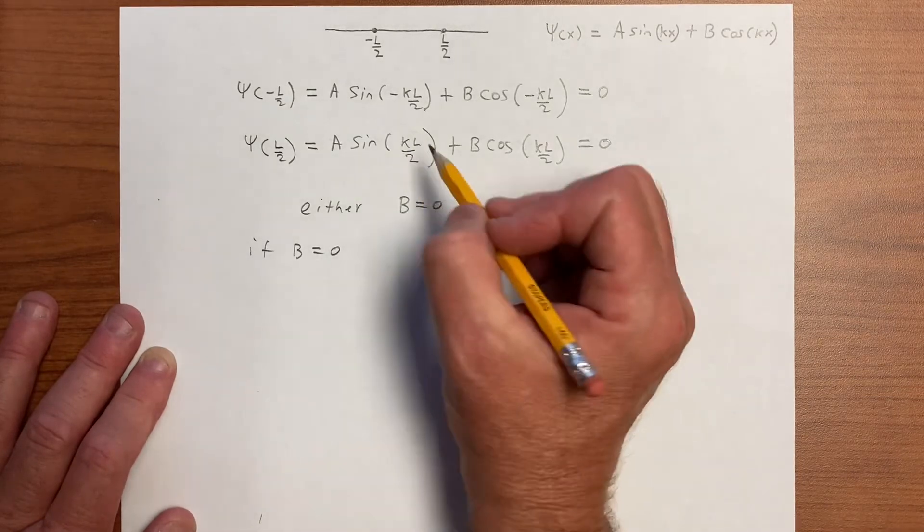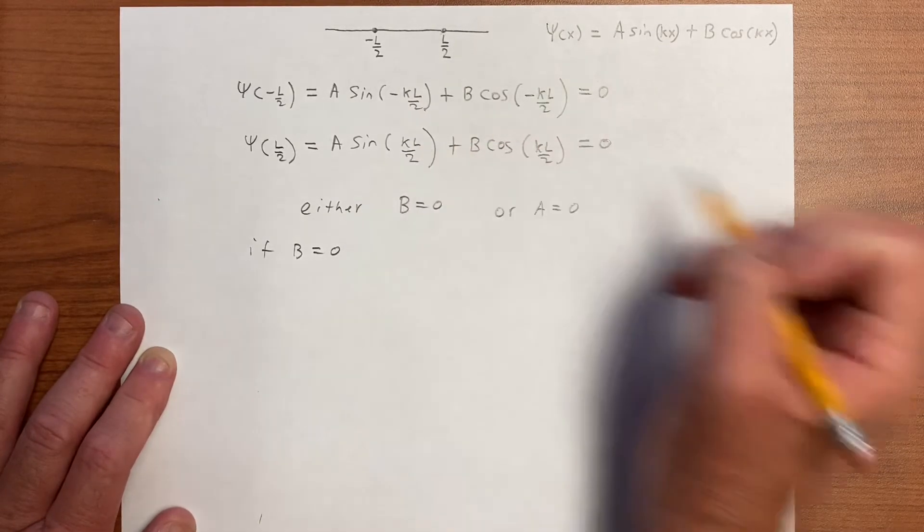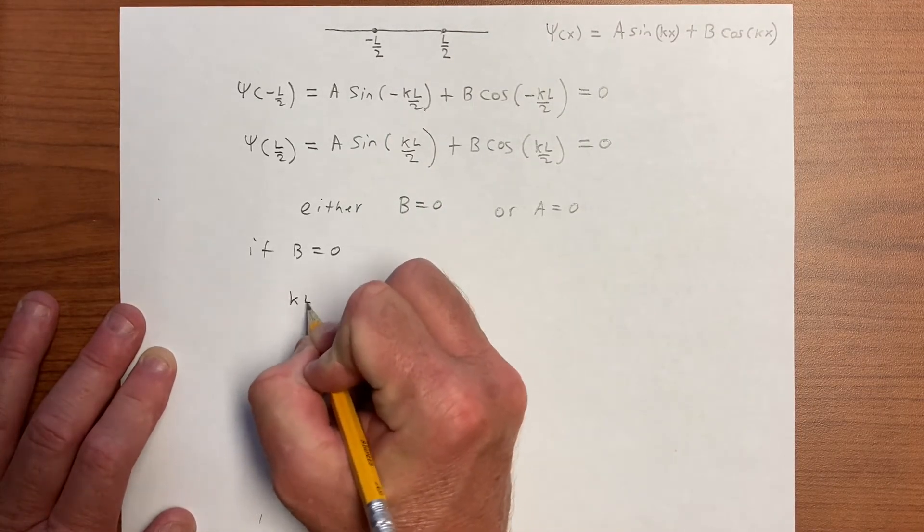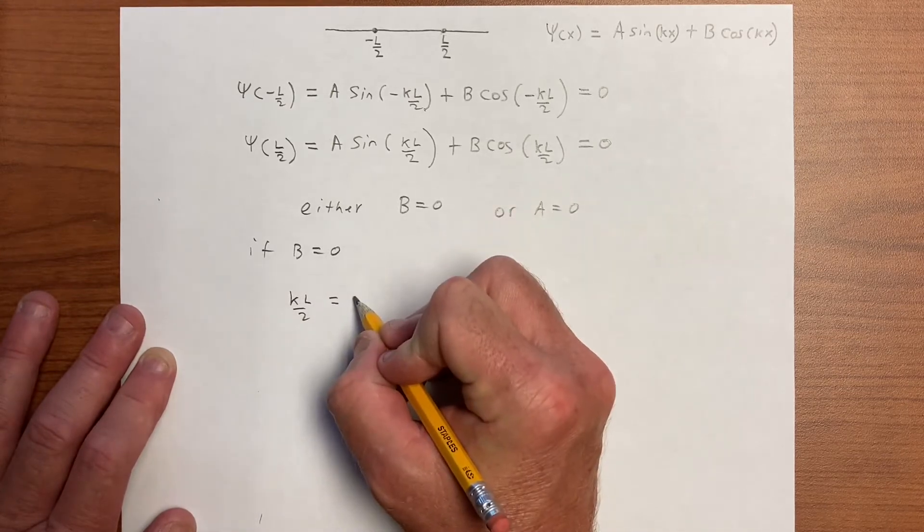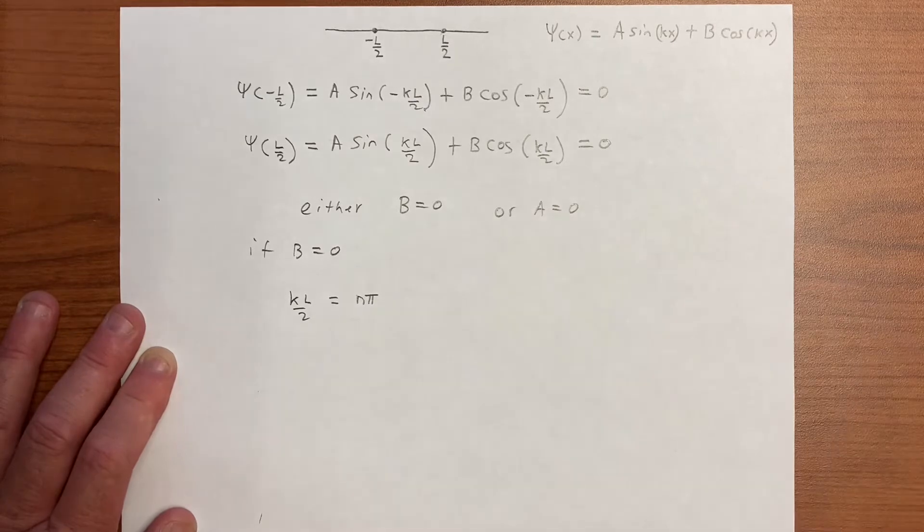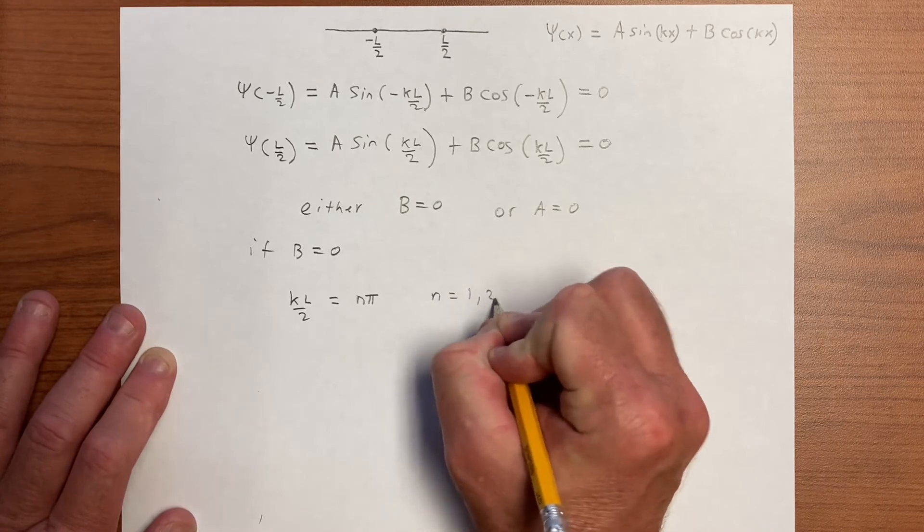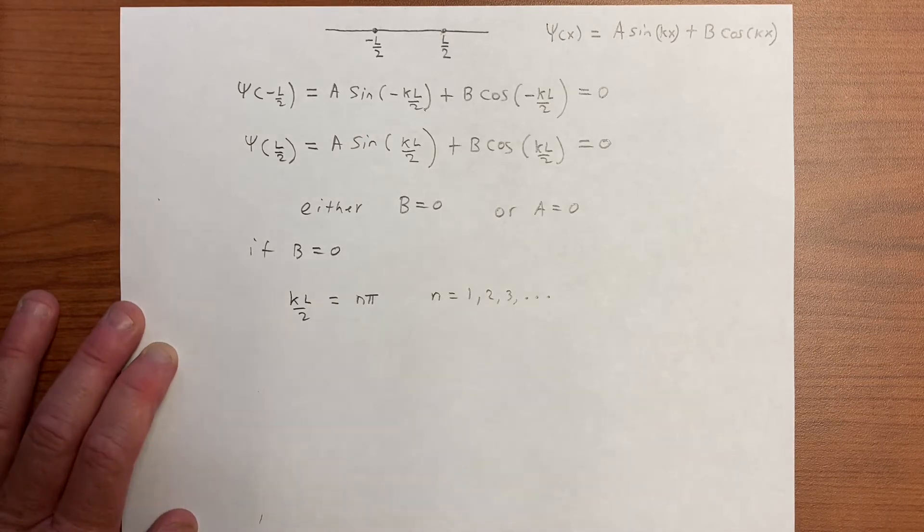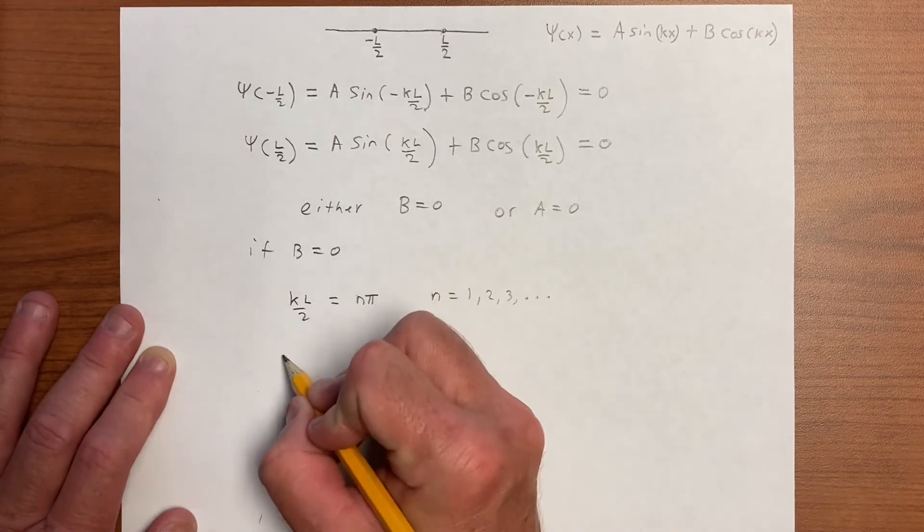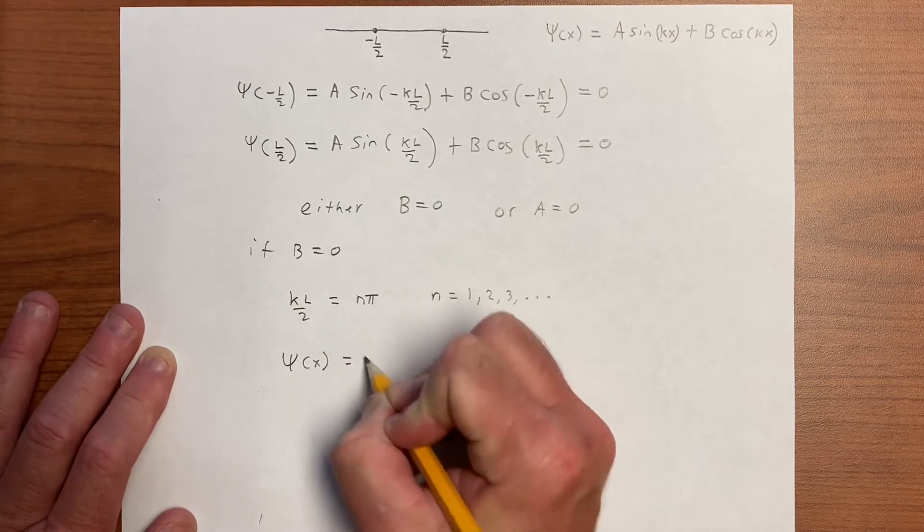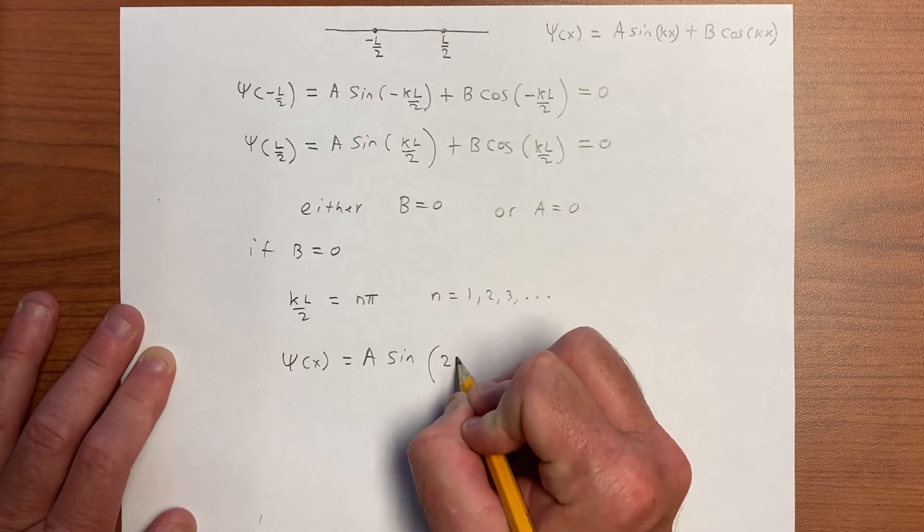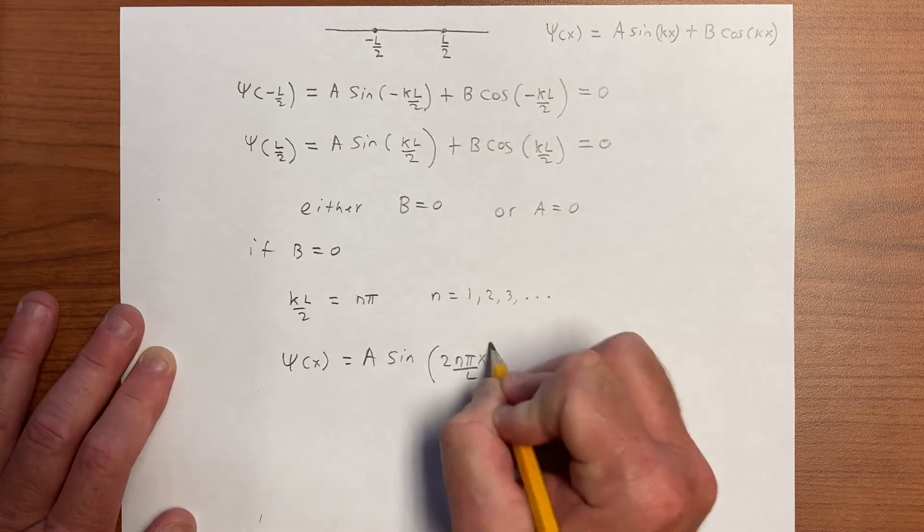And therefore, we have that kL over 2, or minus kL over 2, not that the minus sign makes a difference. So kL over 2 has to have values such that the sine of these values gives a 0. So n can be 1, 2, 3, and so on, but pi, 2 pi, 3 pi, any multiple of pi will make the sine go to 0.